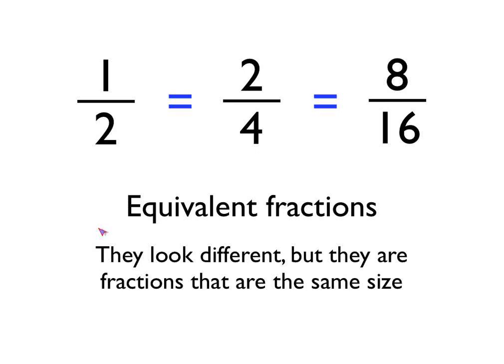So one-half, two-quarters and eight-sixteenths are what we call equivalent fractions. What I mean by that is they look different — they've got different numbers in them — but actually they're the same size. Whether you think of them as the proportion of a square shaded in, or as division sums, you get the same result. They look different, but they're actually the same size, and this is what we mean when we talk about equivalent fractions.